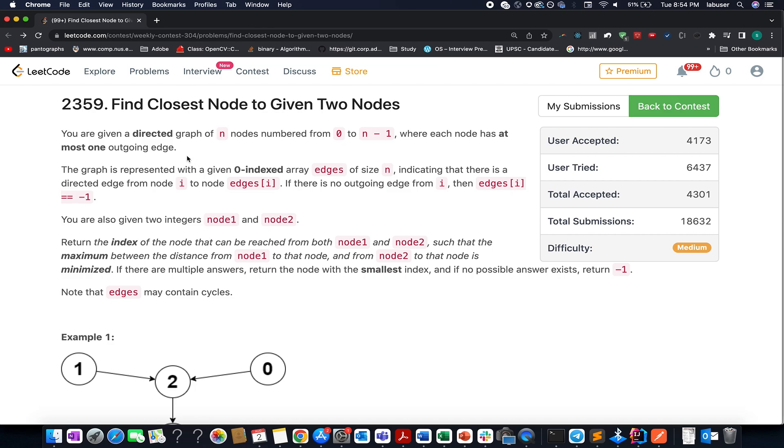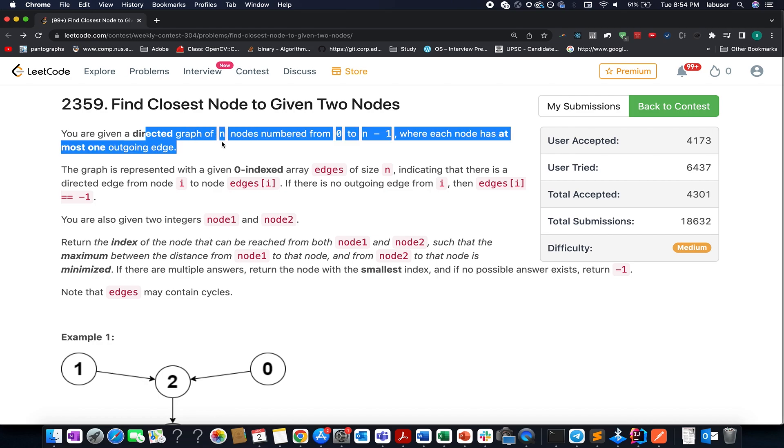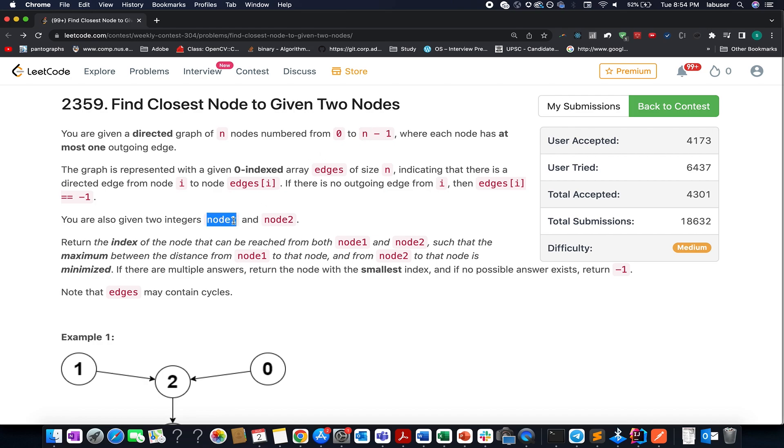Here in this question, we are given a directed graph of n nodes. The IDs of these nodes start from zero and go up till n minus one. Each node can have at most one outgoing edge. So the out degree of each node can be at max one. We're also given two nodes, node n1 and node n2.